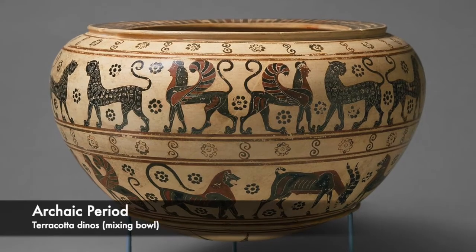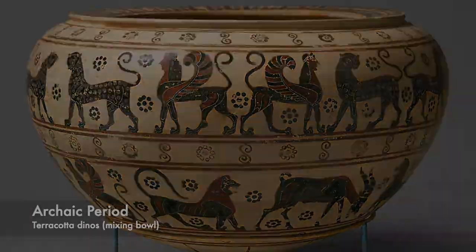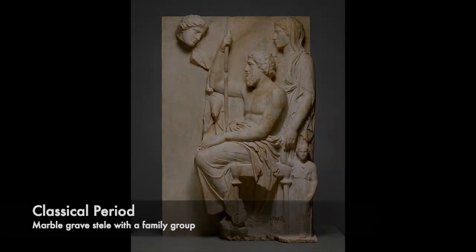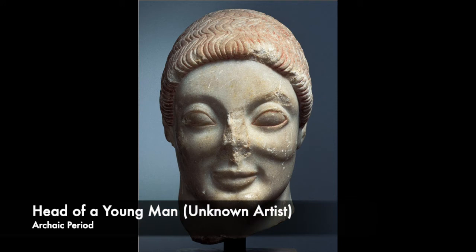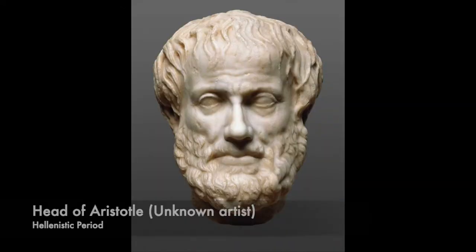Before the Hellenistic period, there were the archaic and classical periods, and these two periods had art that shaped what Hellenistic art became. Art from the archaic period was described as emotionless and rigid, while art from the classical period was much more realistic in comparison. The differences between the classical and Hellenistic periods is mainly how natural the sculpture poses are and how they are able to display emotion.